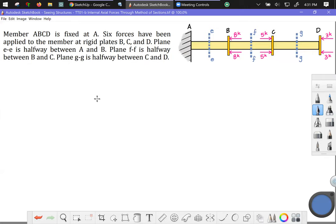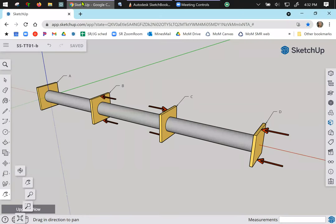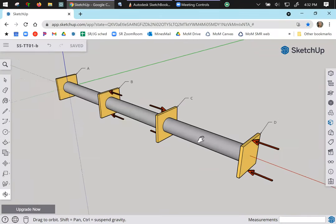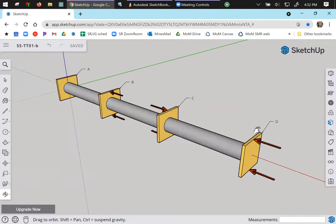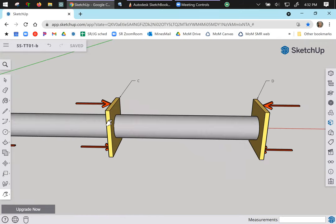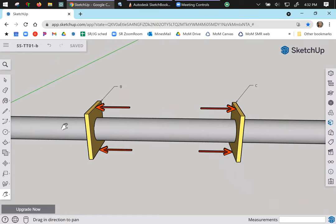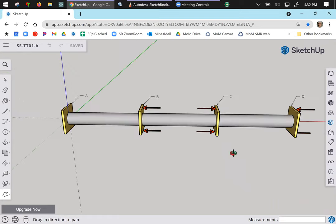Hello! Welcome back to my channel. This example problem shows how to use the method of sections to determine the internal axial force in a composite axial member like this one up here. Before we get into the nitty-gritty of this problem, I did model this for you in CAD. It looks something like this in 3D. Maybe some type of cylindrical piece of aluminum maybe, welded to these rigid plates that are labeled A, B, C, and D.